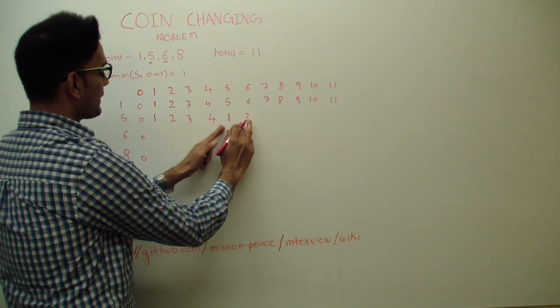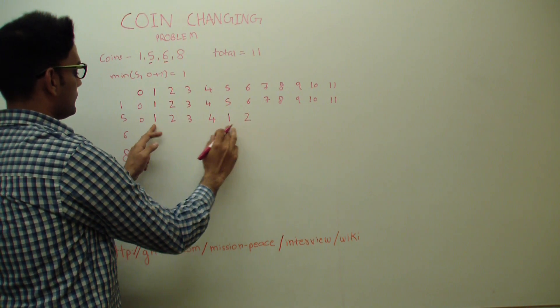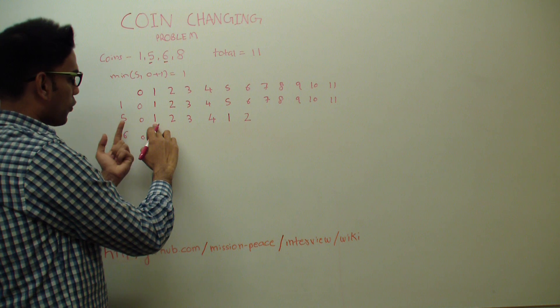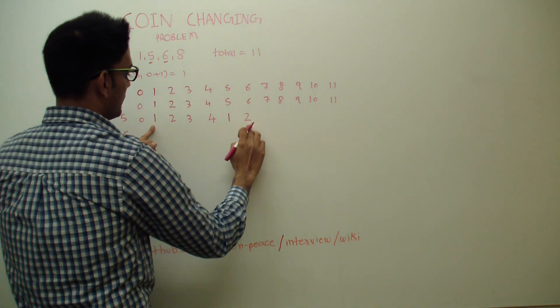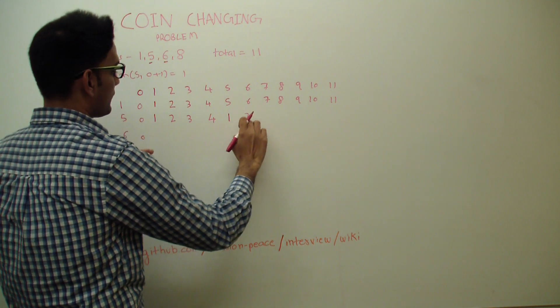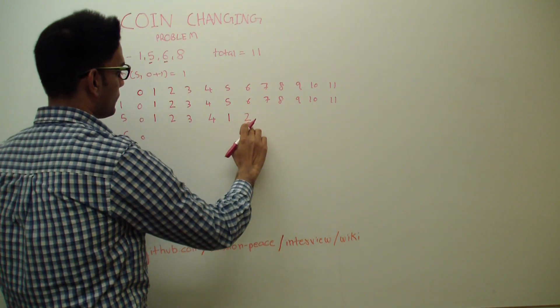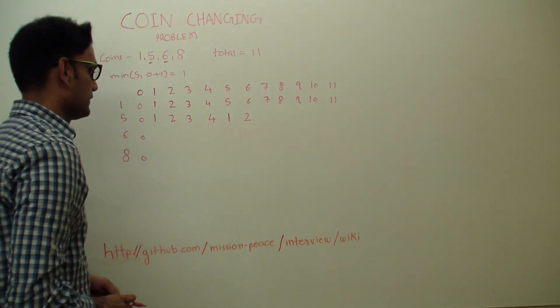So basically we're going 5 steps back here. So reach at 1. We add 1 coin to it. So we get 2. So either 2 or the guy from the top, so minimum of the 2 which is 2 in this case.